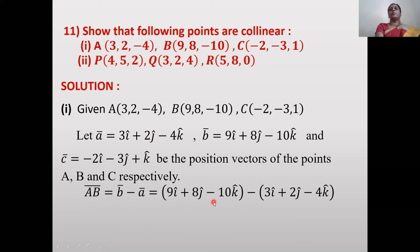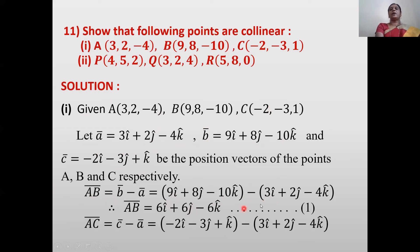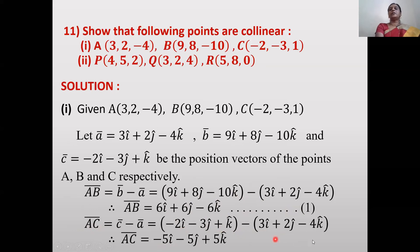AB̄ = (9-3)i + (8-2)j + (-10+4)k = 6i + 6j - 6k. Suppose this is equation 1. Similarly, ĀC̄ = c̄ - ā = (-2-3)i + (-3-2)j + (1+4)k = -5i - 5j + 5k.